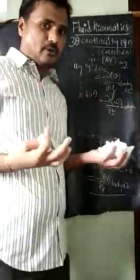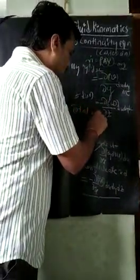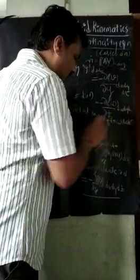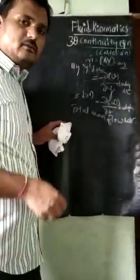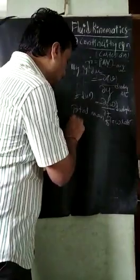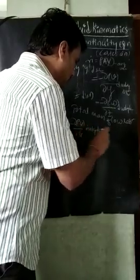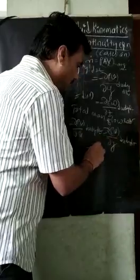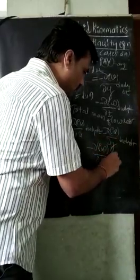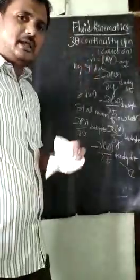The total net mass flow rate is the sum of these three components. Adding them together gives: total net mass flow rate = [−∂(ρu)/∂x · dx·dy·dz] + [−∂(ρv)/∂y · dx·dy·dz] + [−∂(ρw)/∂z · dx·dy·dz]. This is Equation 1.